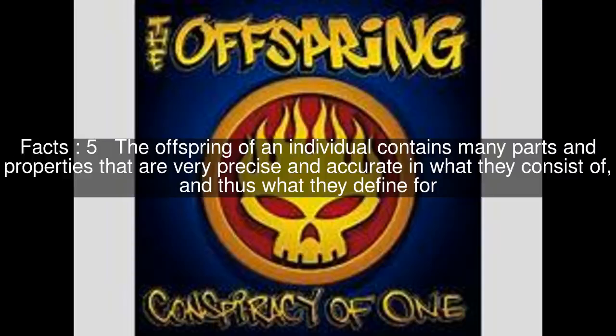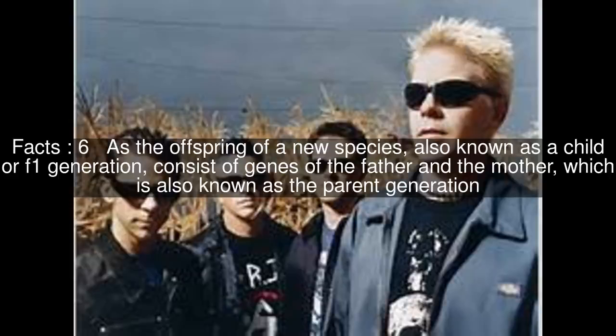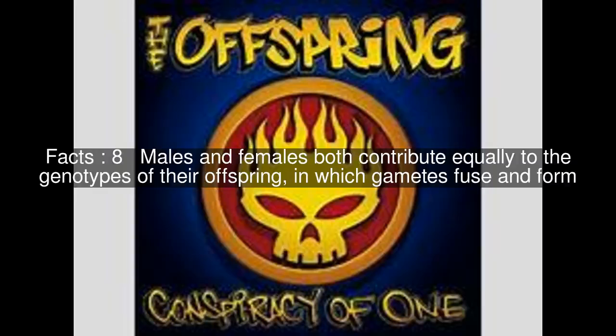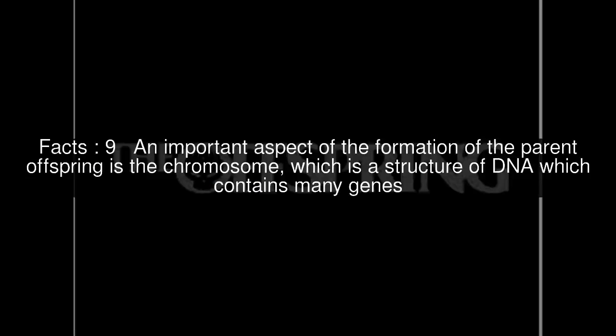The offspring of an individual contains many parts and properties that are very precise and accurate in what they consist of, and thus what they define. As the offspring of a new species, also known as a child or F1 generation, consist of genes of the father and the mother, which is also known as the parent generation. Each of these offspring contains numerous genes which have coding for specific tasks and properties. Males and females both contribute equally to the genotypes of their offspring, in which gametes fuse and form. An important aspect of the formation of the parent offspring is the chromosome, which is a structure of DNA which contains many genes.